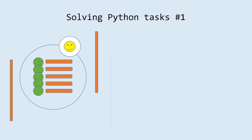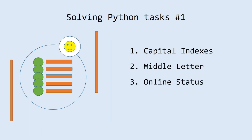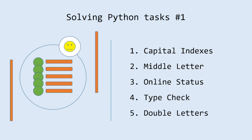We are going to solve five tasks for today. The first is named capital indexes. The second is middle letter. Next is online status. Next, type check. And the last is double letter.